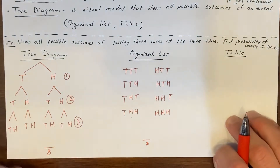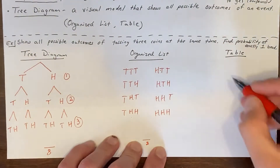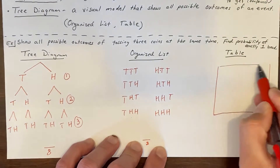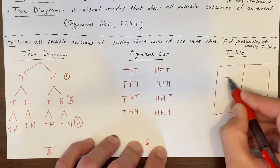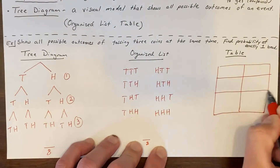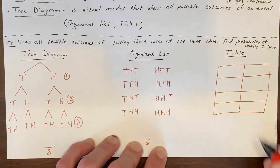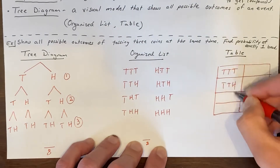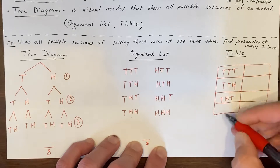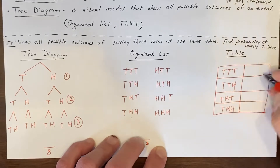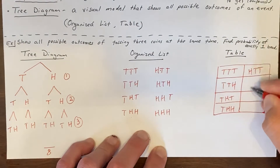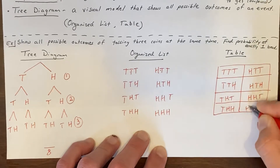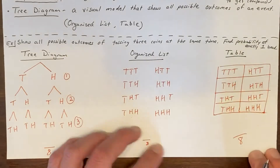For the table, it looks pretty much exactly like the organized list. We just make a table and list our outcomes — tails-tails-tails all the way through — which organizes the information a bit better. It confirms once again that we have eight possible outcomes.